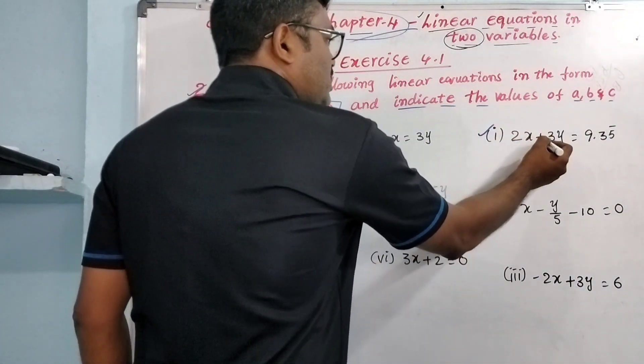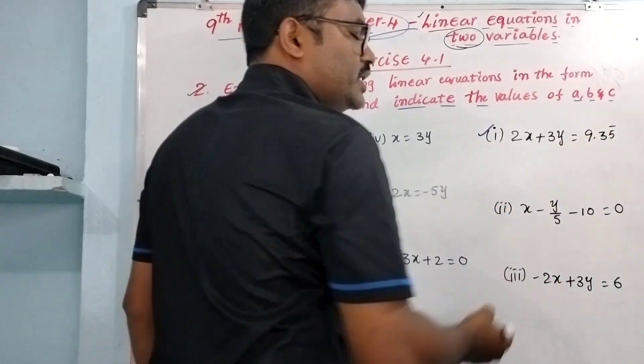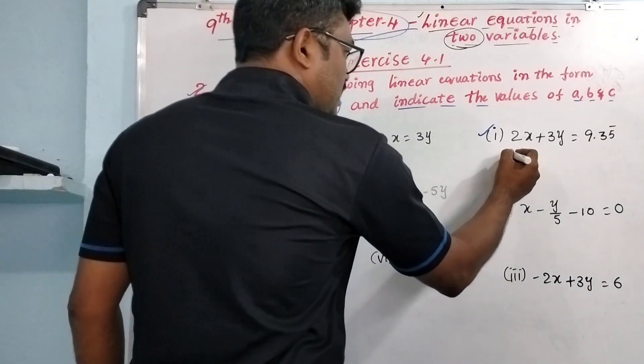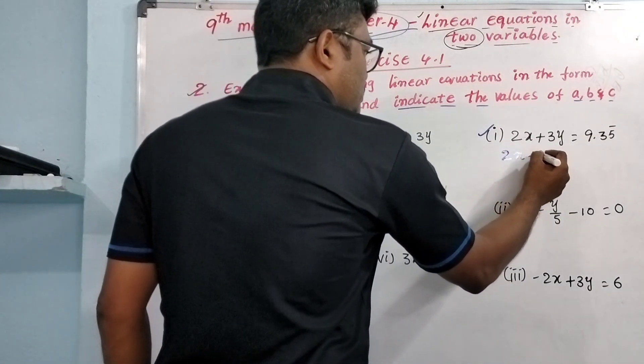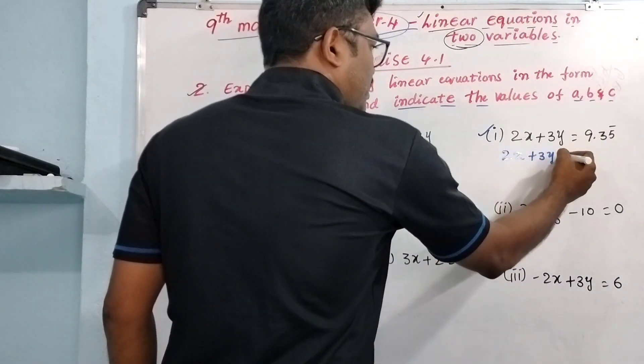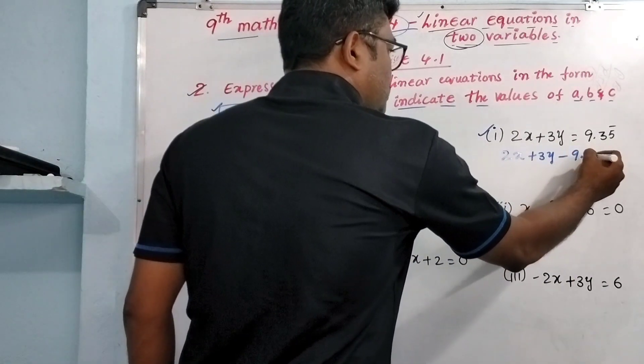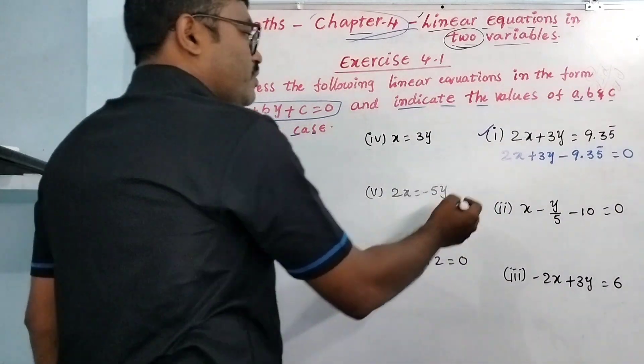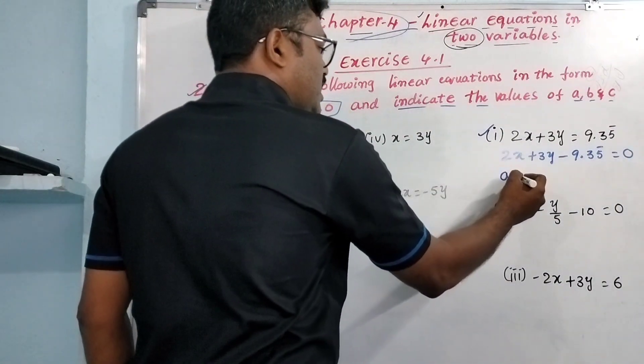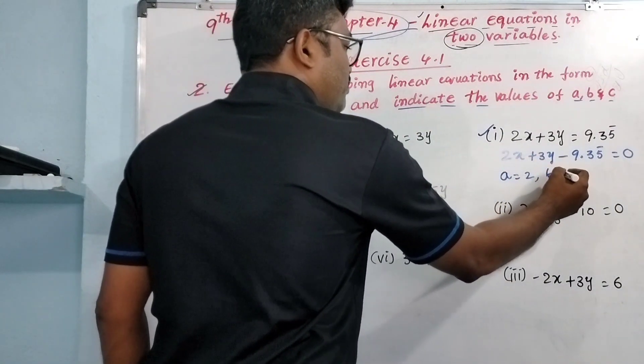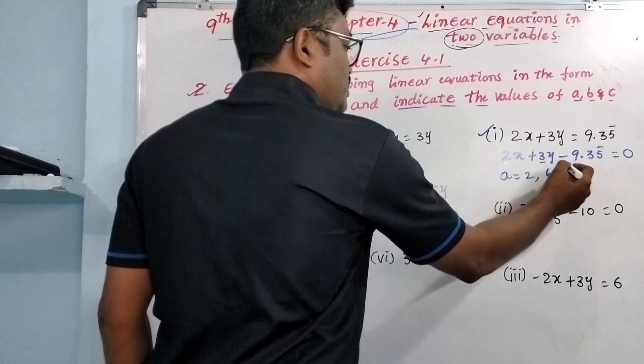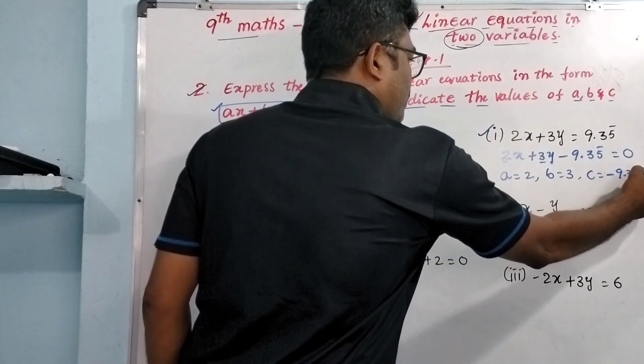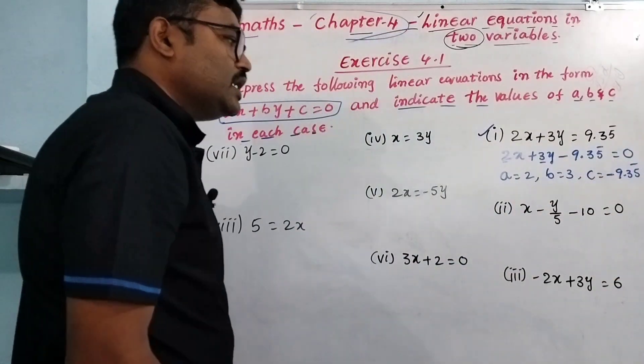First one: 2x + 3y = 9.35 recurring. If I'm going to express this, 2x + 3y minus 9.35 recurring equals 0. If I compare with the standard form, A equals 2, B equals 3, and C equals minus 9.35 recurring.